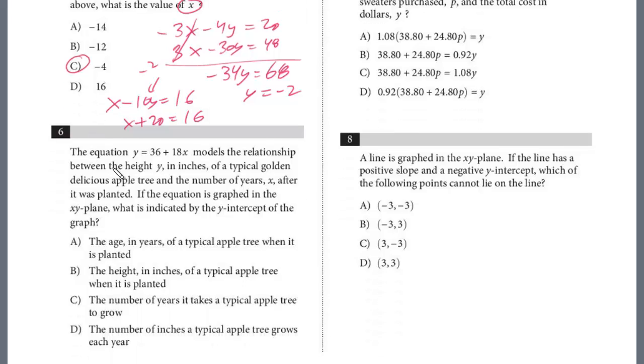Let's take a look at question 6. The equation y equals 36 plus 18x models the relationship between the height y in inches of a typical golden delicious apple tree and the number of years x after it was planted. If the equation is graphed in the xy-plane, what is indicated by the y-intercept of the graph? Another common question on the test. Let's just write this out. Y equals, I'm going to put it in slope-intercept form, 18x plus 36.